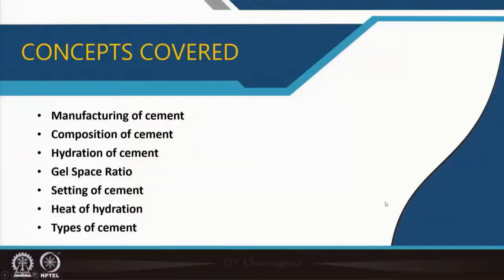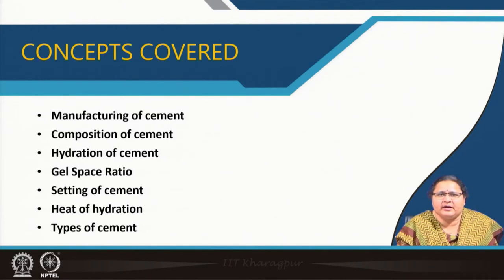Cement is the costliest within the mix and is used in the minimum quantity in most cases. We will try to cover its manufacturing, composition, and then the main part which gives it strength: the hydration of cement, the gel-space ratio, setting of cement, heat of hydration, and the different types of cement.